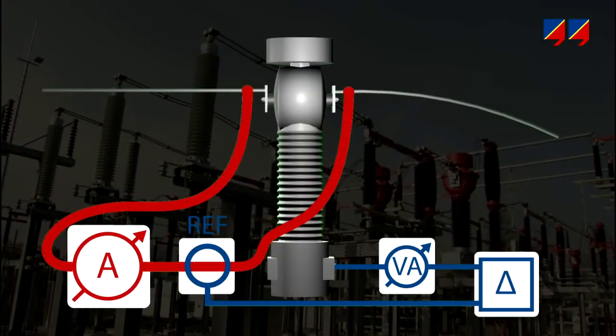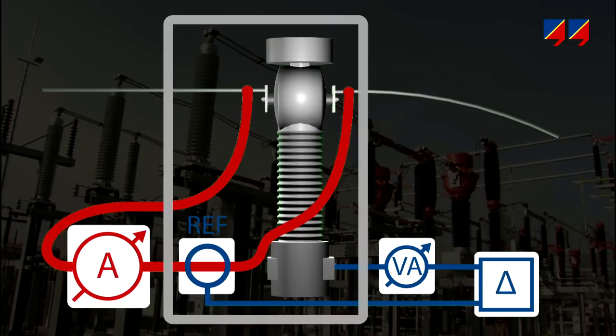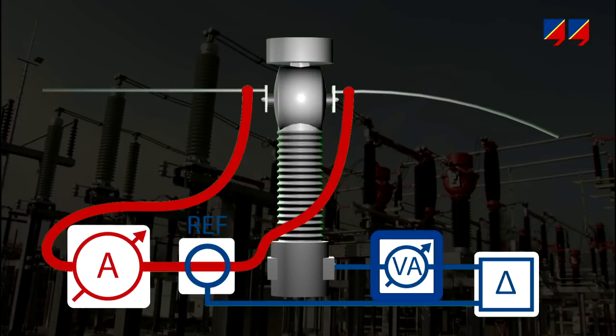If a CT is to be comprehensively tested in a classical manner, the current bridge method is used. Through a high-current source, defined values of primary currents — from fractions to multiples of rated current — are injected into a reference CT and the CT under test, which is connected to a controllable burden box to simulate different load conditions.